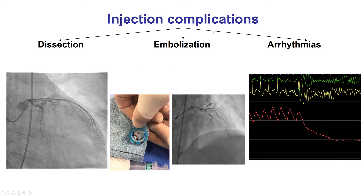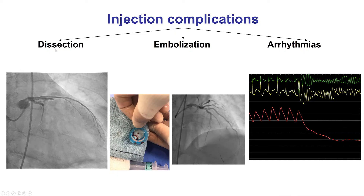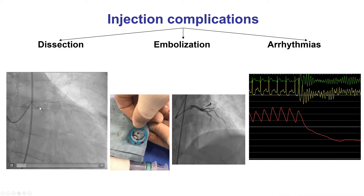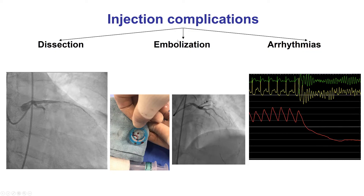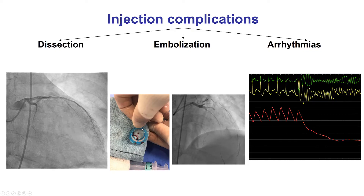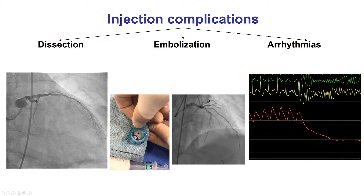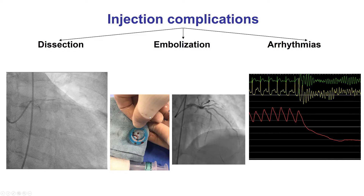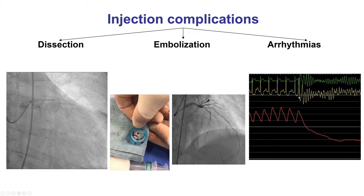Many bad things can happen when injecting contrast into coronaries, starting with injury of the vessel, causing dissection, potentially acute vessel closure and even patient death. Second, embolization, if there are bubbles in the line or if there is thrombus or other material in the line that can occlude the coronary artery and cause severe complications. And finally, arrhythmias can happen, for example, if injection is done in a small conus branch.